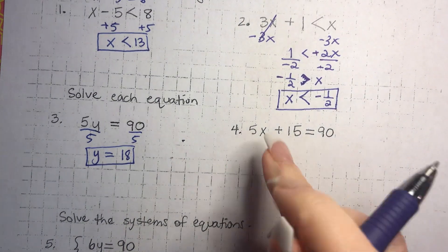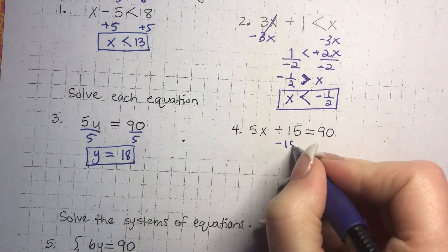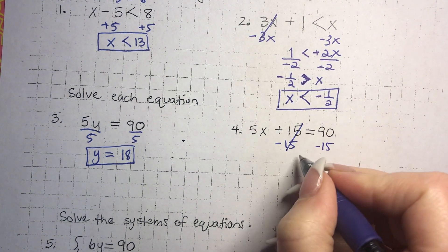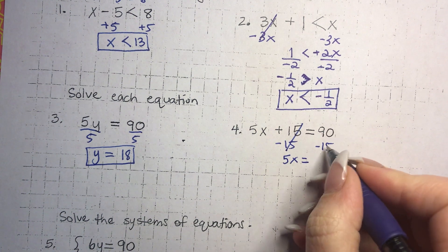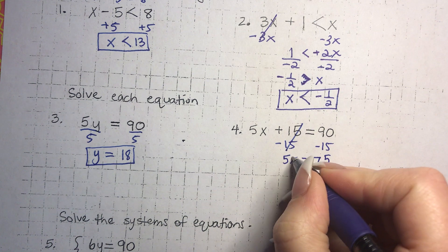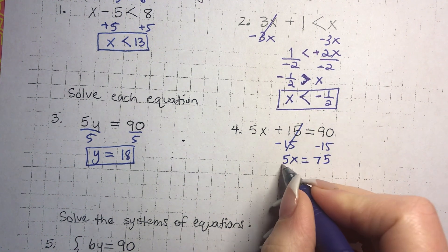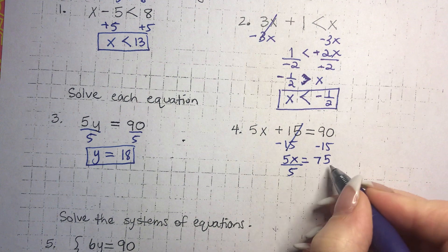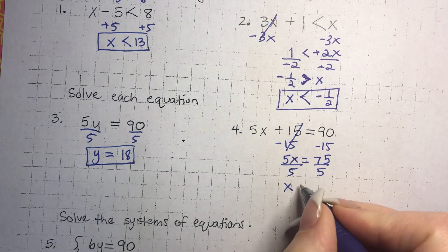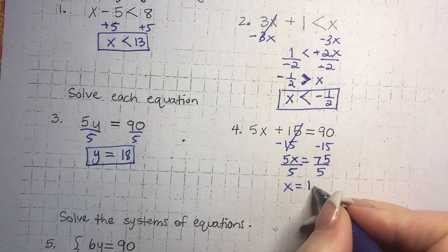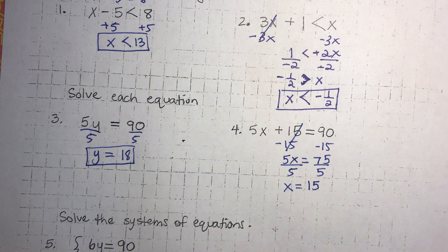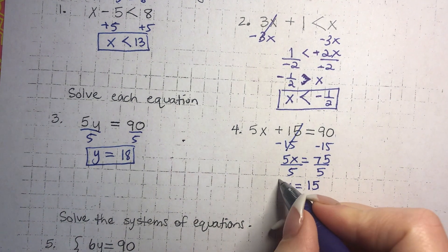Over here on problem 4, we're trying to get x by itself. First we're going to get rid of the 15 by using the subtraction property of equality — that cancels, and we're left with 5x equals 75. Then we do the inverse operation of multiplication, which is division. 5 divided by 5 is 1, 1 times x is x, and we end up with 75 divided by 5, which is 15. So x equals 15.